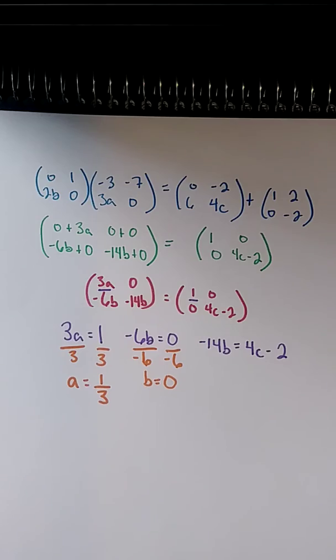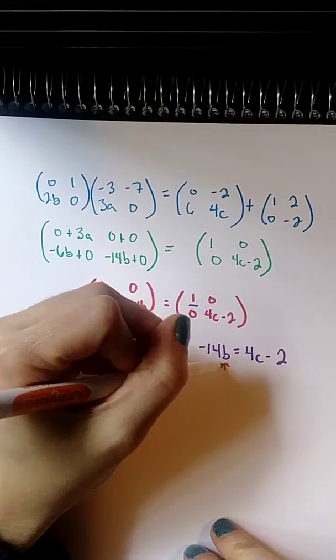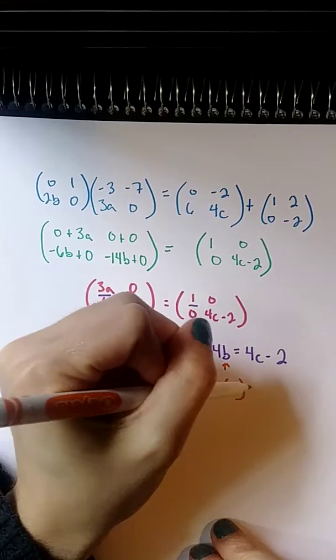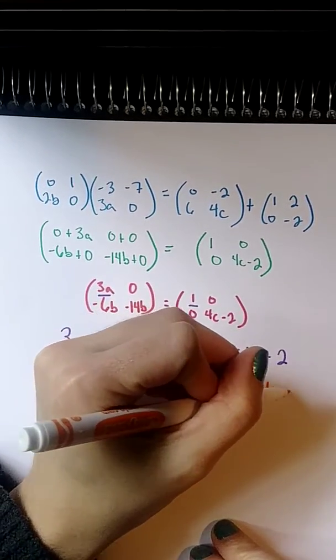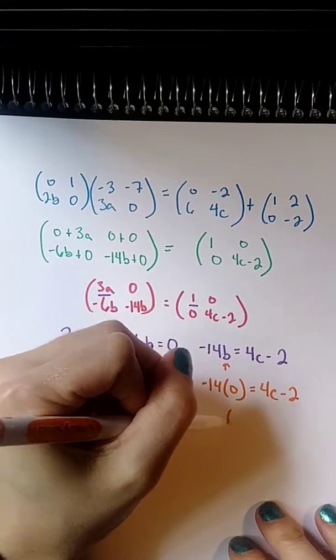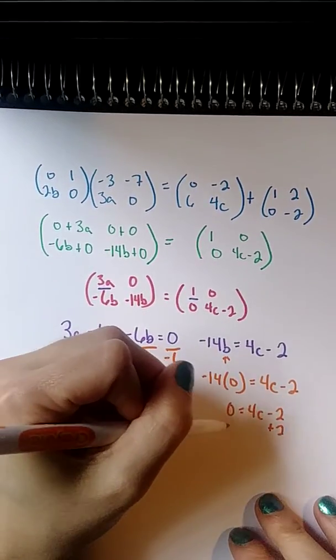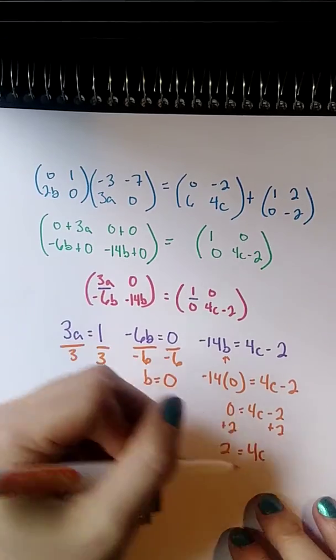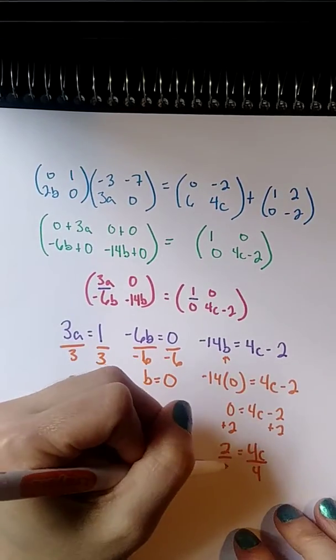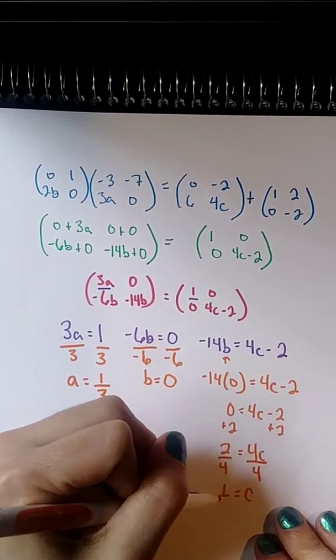And now, for my last one, I already know b is 0. I can plug that in here. So, -14 times 0 equals 4c minus 2, which means 0 is 4c minus 2. So, I can add 2 to both sides, and I get 4c equals 2. And when I divide both sides by 4, I get c equals 1/2.